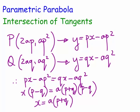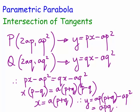So the x-coordinate of the intersection of the tangents is a(p + q). For the y-coordinate, we substitute into y = px minus ap²: y = p·a(p+q) minus ap² = ap² + apq minus ap² = apq. So the intersection of the two tangents is at the point (a(p+q), apq).